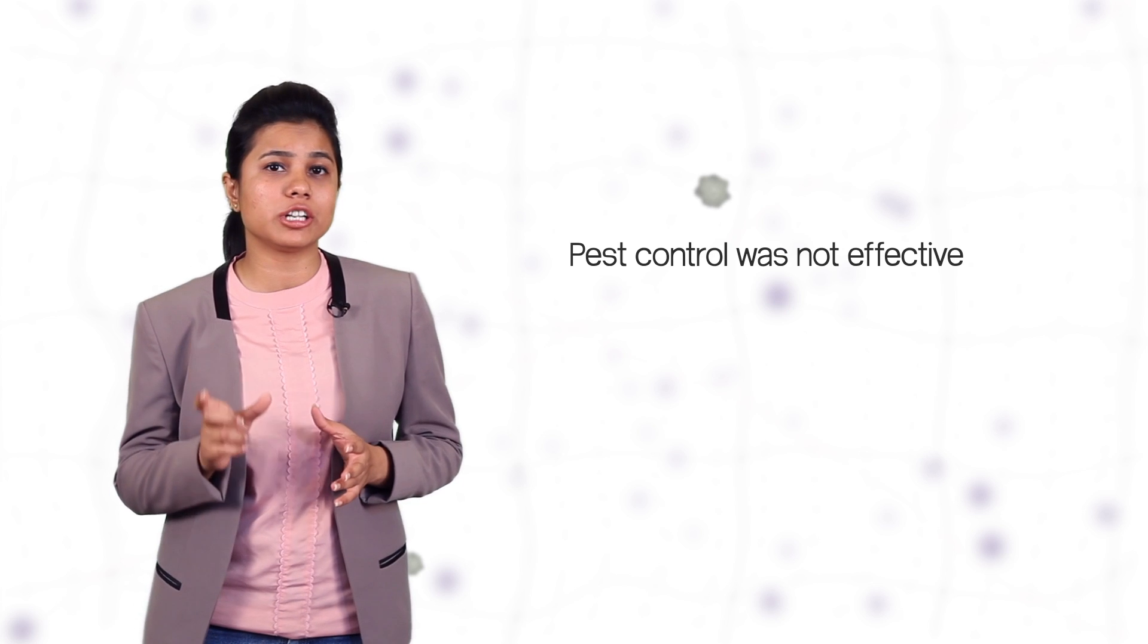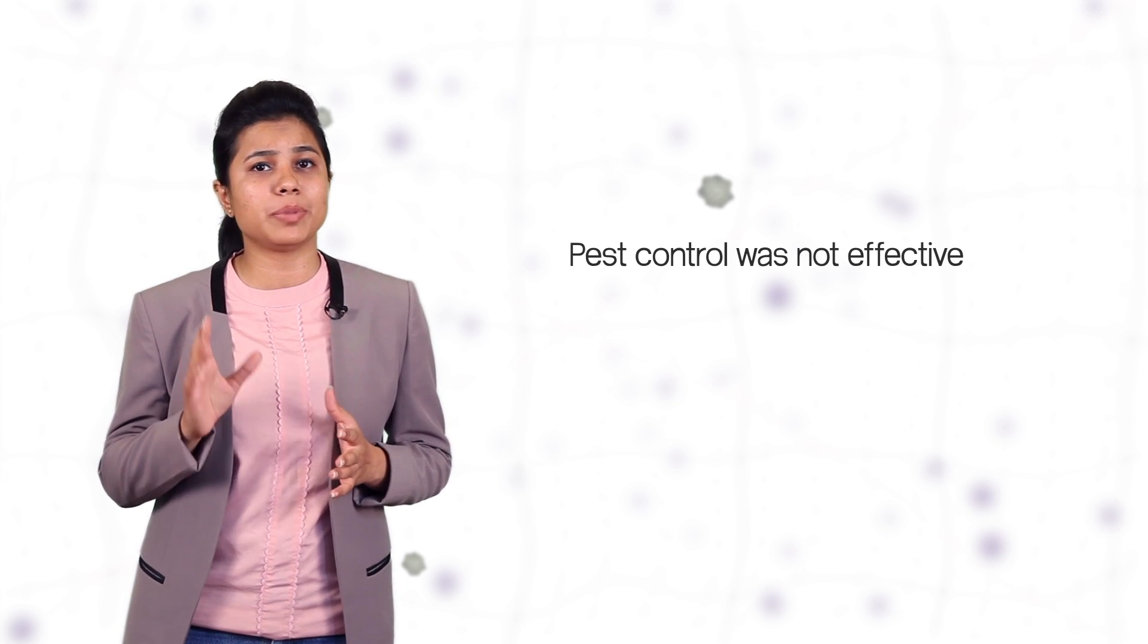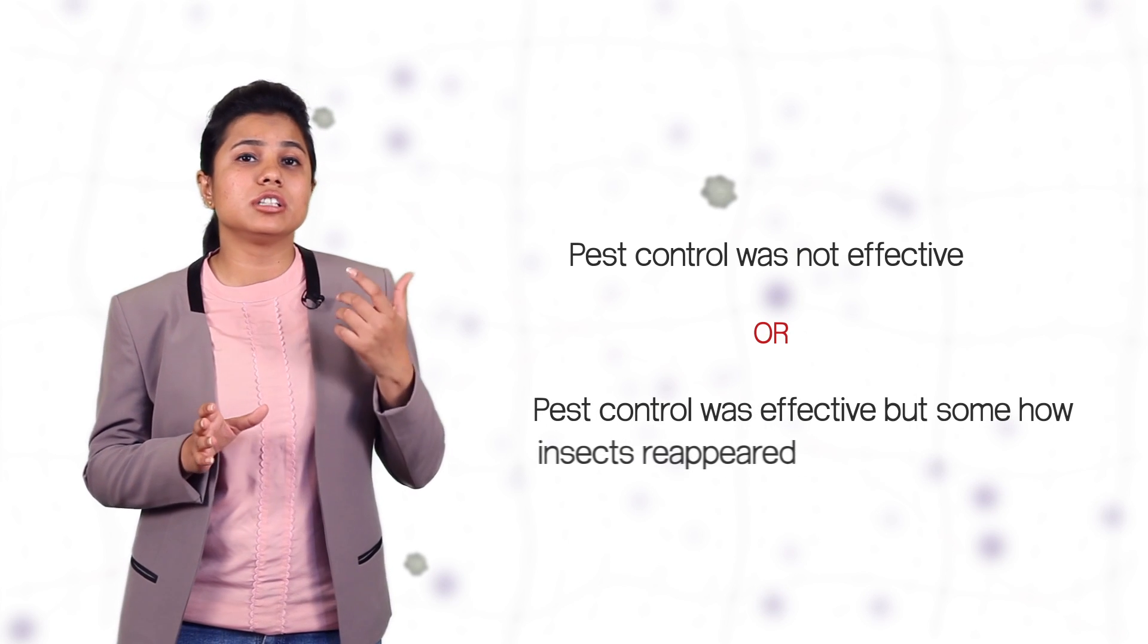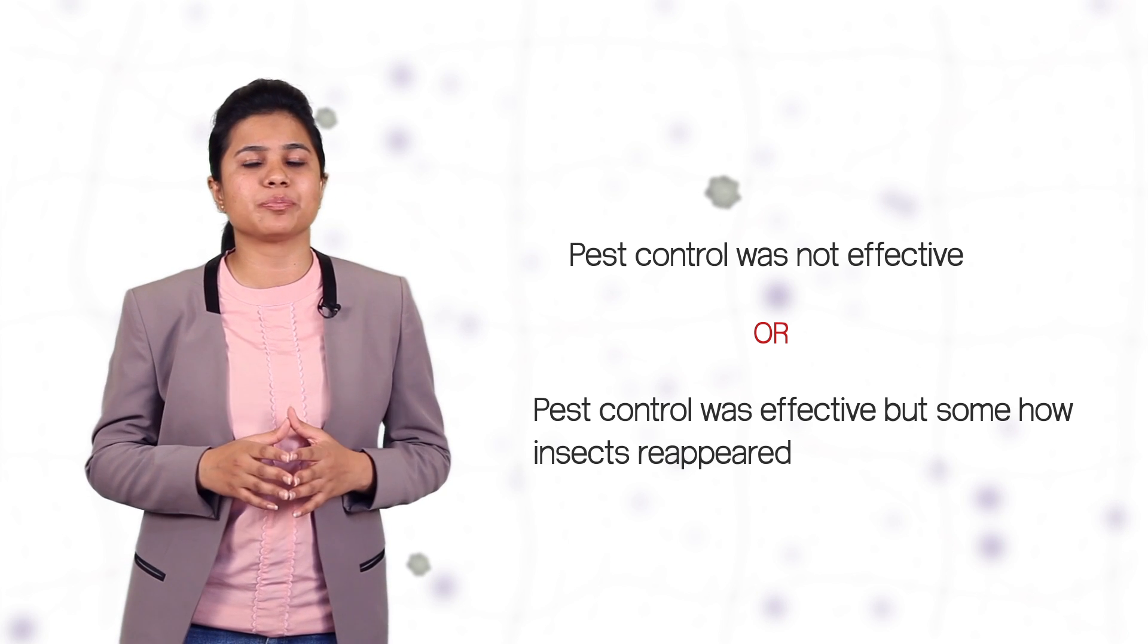You figure out two explanations for this. One explanation is that the pest control was not effective and no insects were killed and you got ripped off by the pest control agency. Another explanation could be that the pest control agency did they work well but somehow some insects appeared. But if the insects were not killed, then why did they appear after few days and not just after few hours of pest control?